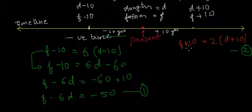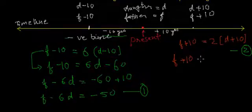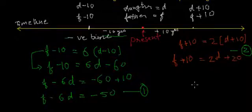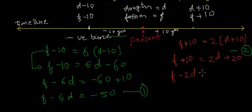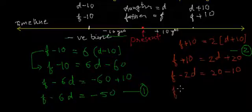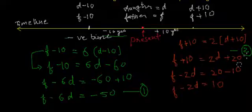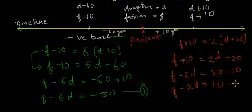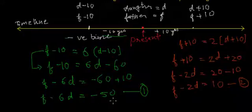Now if we simplify the second equation — F plus 10 = 2(D plus 10) — we get F plus 10 = 2D plus 20. Rearranging gives F minus 2D = 20 minus 10, so F minus 2D = 10. We will call this Equation 2. So Equation 1 is F minus 6D = minus 50 and Equation 2 is F minus 2D = 10.